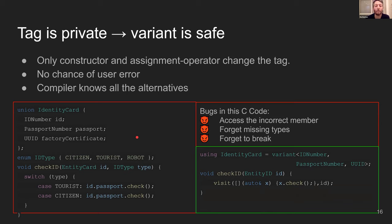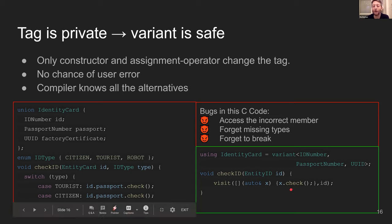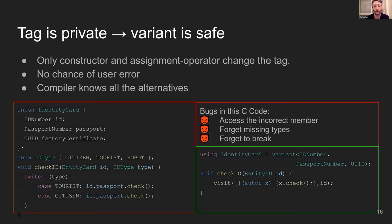From a variant perspective, things are much simpler. An identity card can be a variant of three types — it holds both the union and the tag. The `visit` function does all the work. I give it one generic lambda that receives an `auto`, call a method on the object, and the compiler will make sure all the different entities of the variant actually have that method. If not, I get a compile-time error. There's no way to forget anything. This is the safety of a variant on top of union.